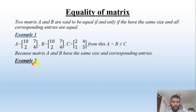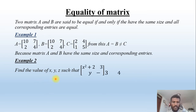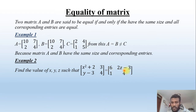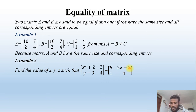Let's do another example: find the value of x, y, and z given that the matrix [x² + 2, 3y − 3; 4] equals [6, 2; z − 3, 4]. So we equate corresponding entries: x² + 2 equals 6, y-related entry equals its counterpart, and this value equals z − 3.